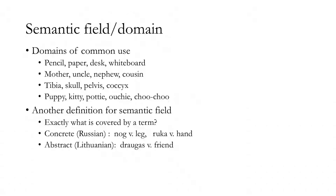So we've seen lots of ways that morphemes can be related to each other in the lexicon: by phonology, by domains of meaning, through synonymy, antonymy, hypernymy, hyponymy, shared fields of use in everyday life — the semantic domains — or their actual literal meaning, the semantic field in that sense of the word.